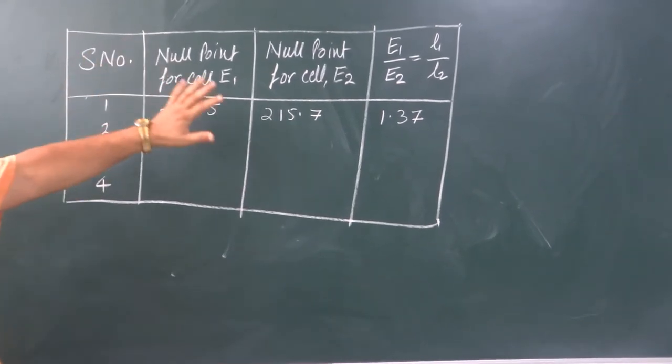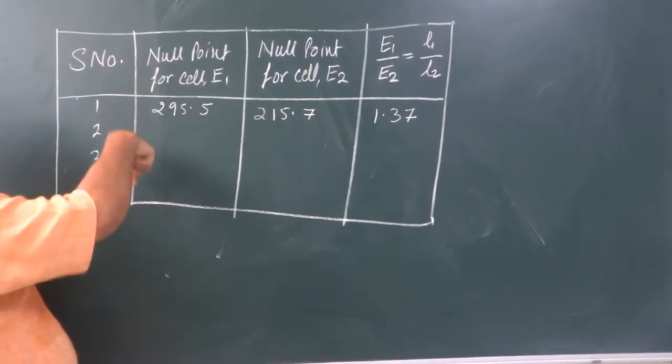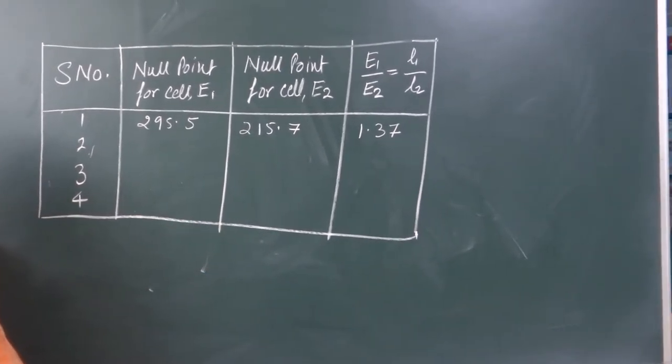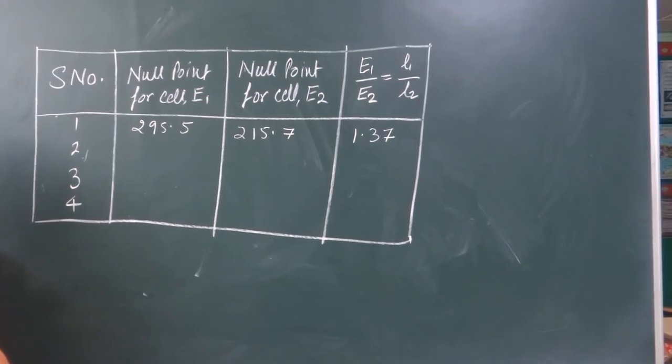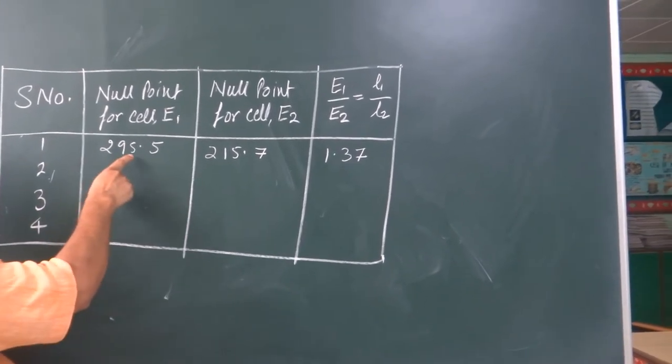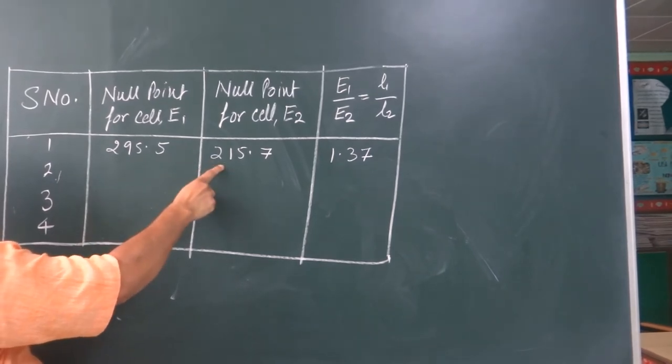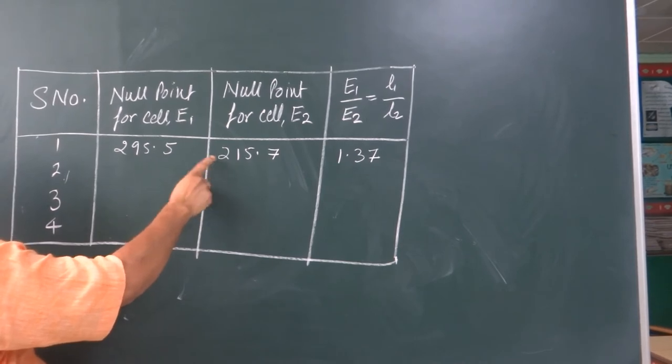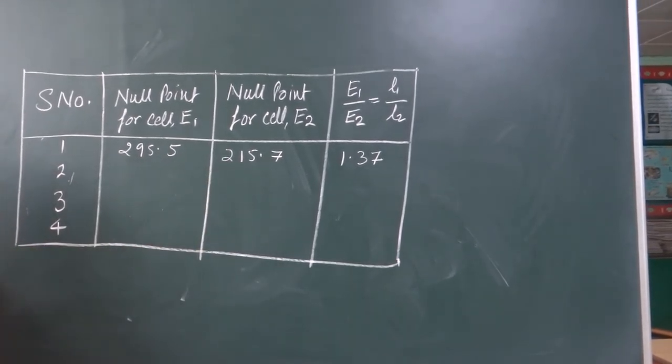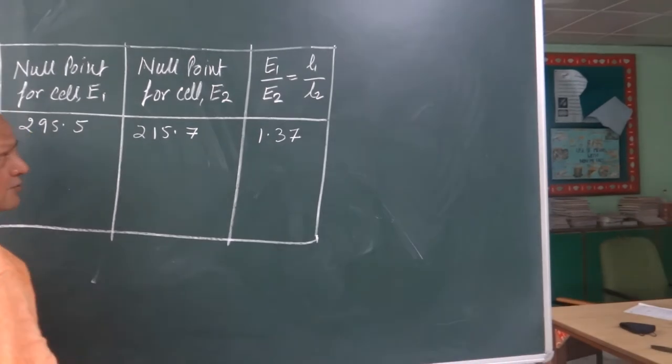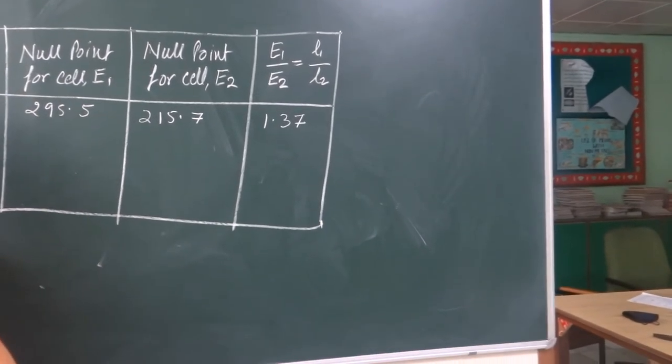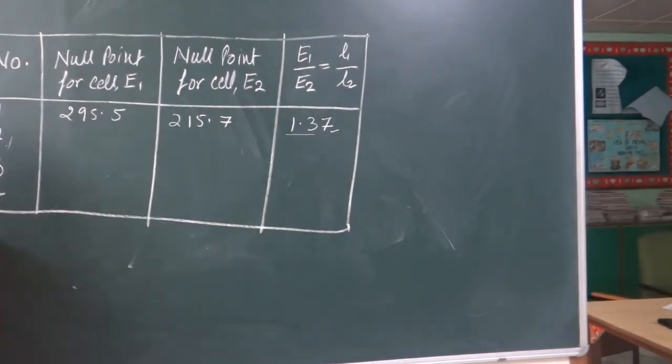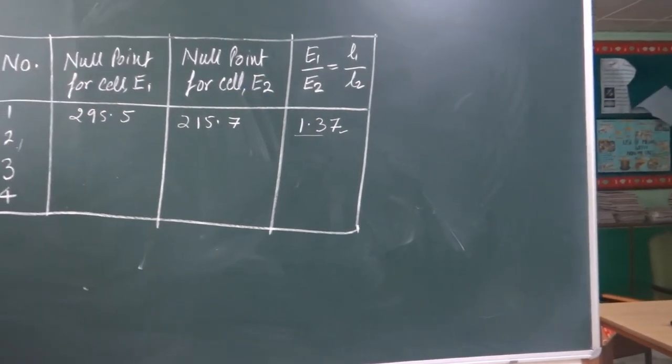See, this is an observation table. You can create one more column for ammeter reading. You can check the ammeter, and it should be constant while you are finding null point for cell 1 and cell 2. As I showed you in the experiment, we have taken readings for E1 and E2 both. So you simply use the formula E1 over E2 equals L1 over L2. And the ratio comes out 1.37.